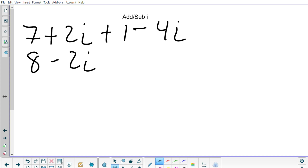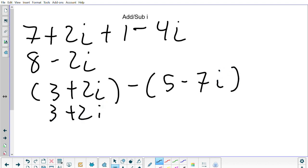So if I were given 3 plus 2i minus 5 minus 7i, I would rewrite this as 3 plus 2i, distribute the negative, I have negative 5, two negatives make a positive 7i. Then I would add my constants. So 3 minus 5 is negative 2, and 2i plus 7 is 9i.